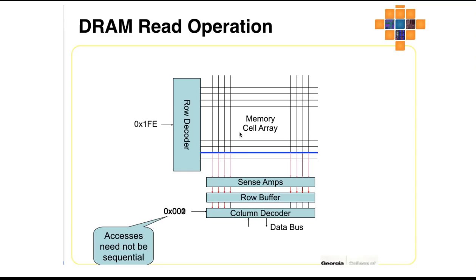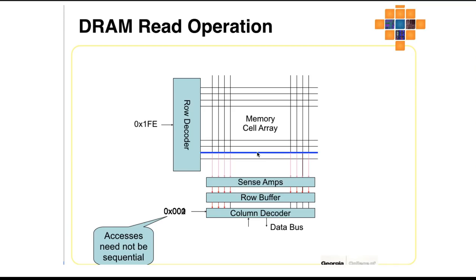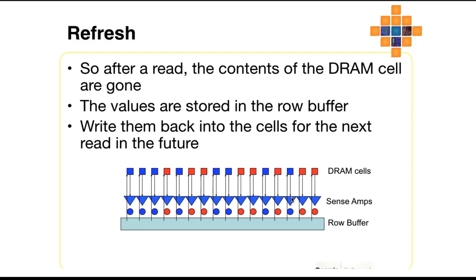This saves a lot of time — if you want to access any column, it is better to first access the particular row. When a read operation happens, a particular row is pushed into the sense amplifier, then all the columns are decoded by the column decoder and you can address a particular location. That particular data is then sent onto the data bus. The row decoder decodes the row address, selects the row, pushes it to the sense amplifier, and then you can decode the column to access the specific row-column location.